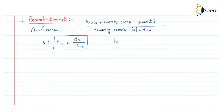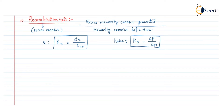Similarly, if we consider the holes, then for the holes the recombination rate is denoted by Rp, and it will be delta-p divided by tau-p0. Where delta-p is the excess hole concentration, and tau-p is the excess hole carrier lifetime. So this is the recombination rate for the holes.